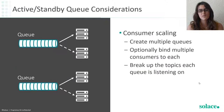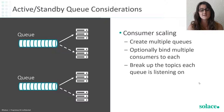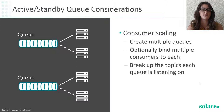For consumer scaling with an active standby or exclusive queue, what we're going to do is create multiple queues. To best use this, we're going to break up the topics each queue is listening on, and then optionally bind multiple consumers in that active standby pattern to each of these queues. This means fewer messages will go into an individual queue, whereas if we only had one queue, it would be listening on a variety of topics and would have many more messages spooled onto it.